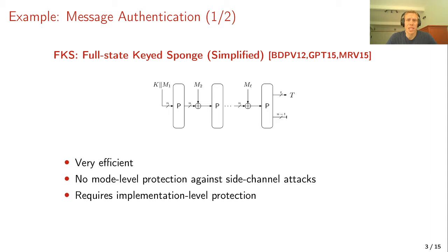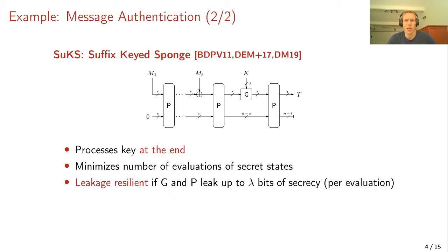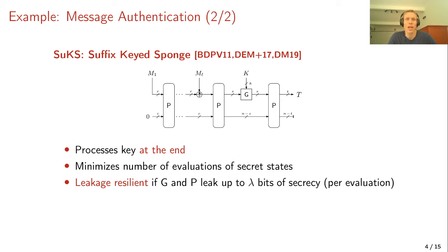An alternative is SUCKS, the suffix keyed sponge, originating from Bertoni et al. in 2011. The general version that Christof and I proved leakage-resilient two years ago has the key processed only at the end. The first part is a keyless hashing phase using R bits at a time — full state absorption is avoided because that could allow the attacker to find a collision. After compressing all message blocks, the key is blended in using some function G, followed by one more permutation call to produce the tag.